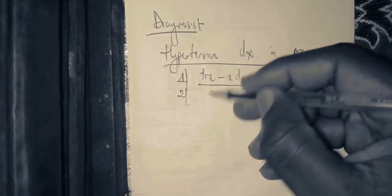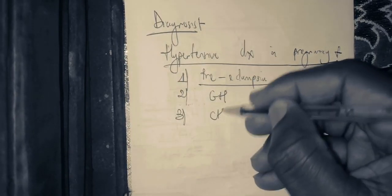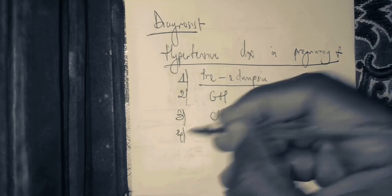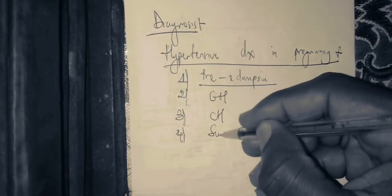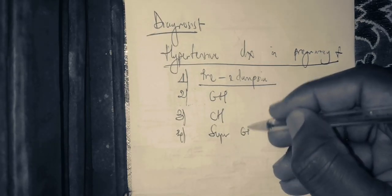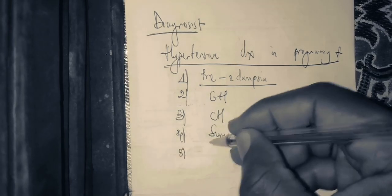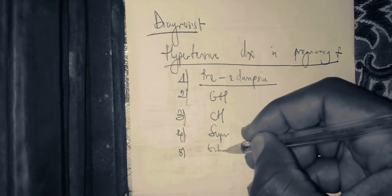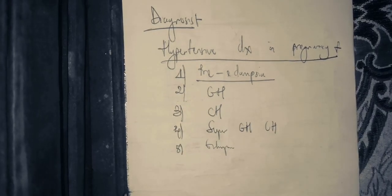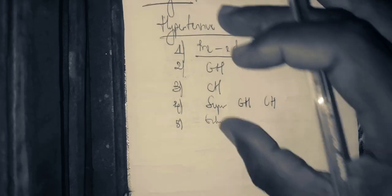The differential diagnoses for hypertensive disease in pregnancy include: gestational hypertension, chronic hypertension, superimposed preeclampsia on chronic hypertension, and eclampsia. These are the different hypertensive disorders in pregnancy.